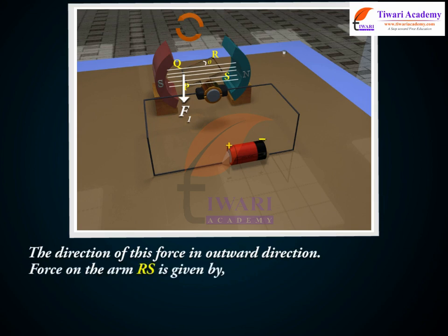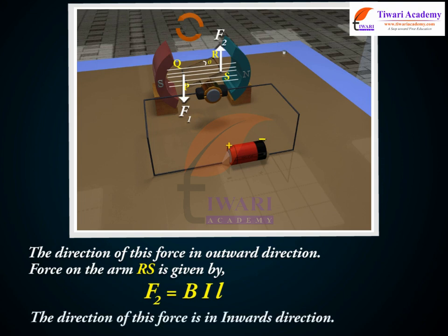Force on the arm RS is given by F2 equals BIL. The direction of this force is in the inward direction.